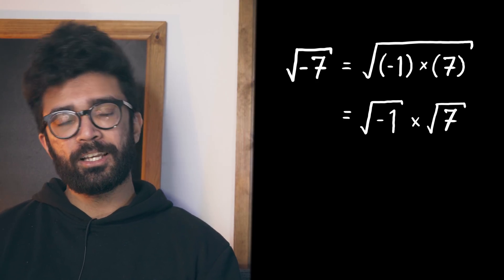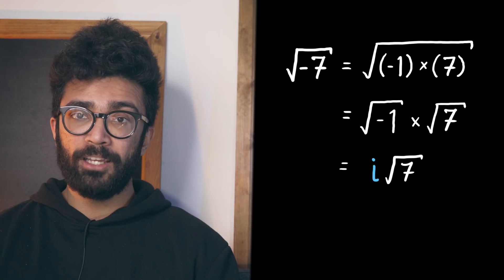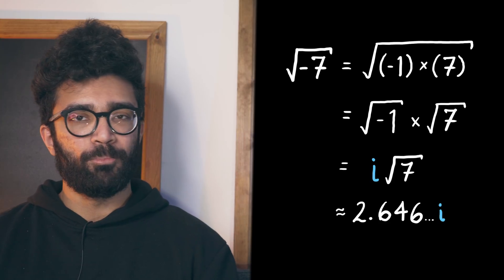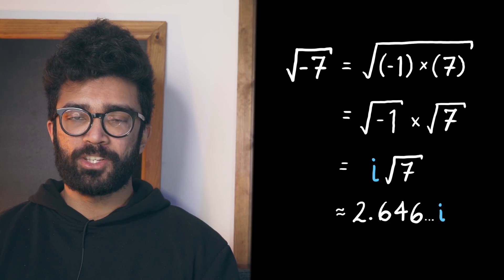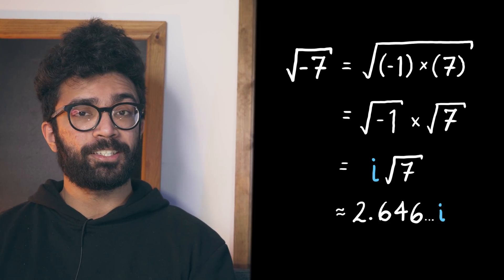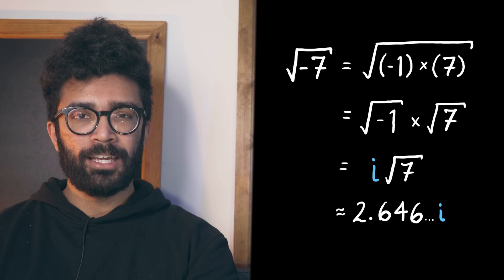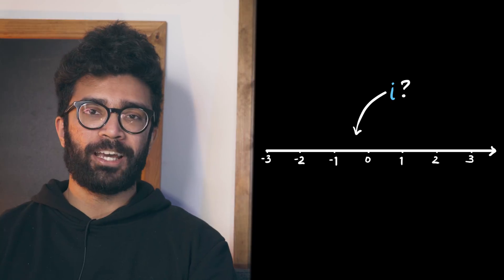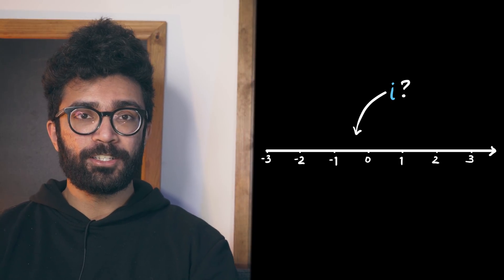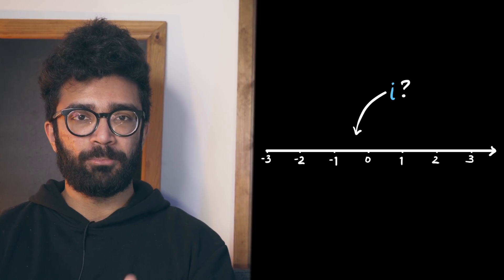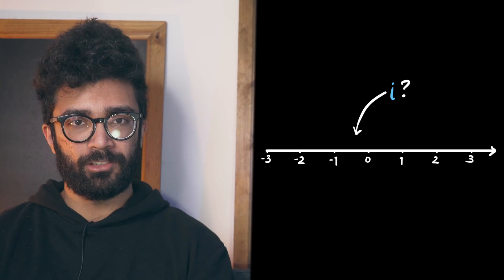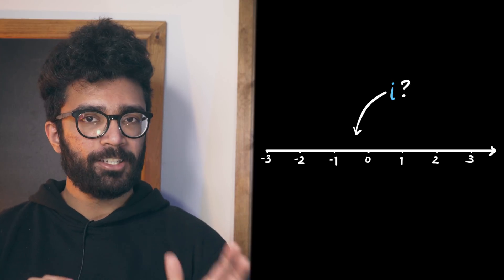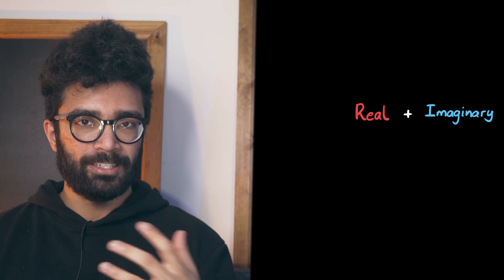Using this simple imaginary number that we've defined, we can write the square root of any negative number. For example, the square root of negative seven can be written as i times the square root of positive seven. So that's an imaginary number — something multiplied by this quantity i. It doesn't actually fall on the number line that we're used to, but we'll come to that in a moment.